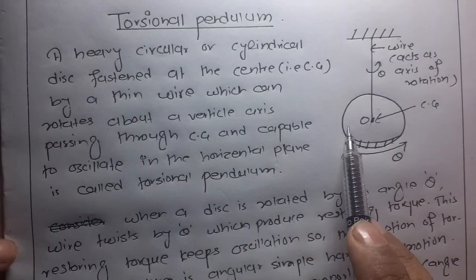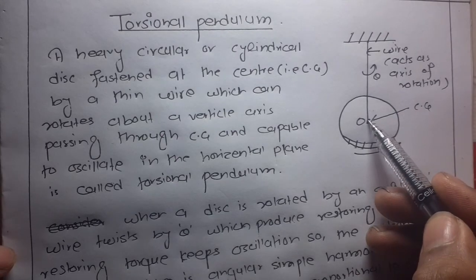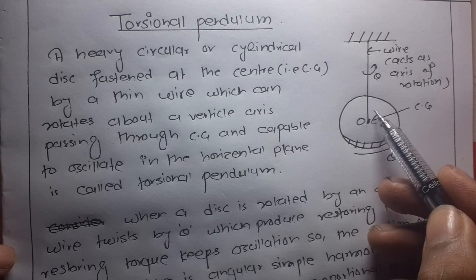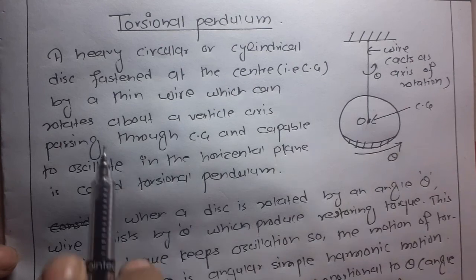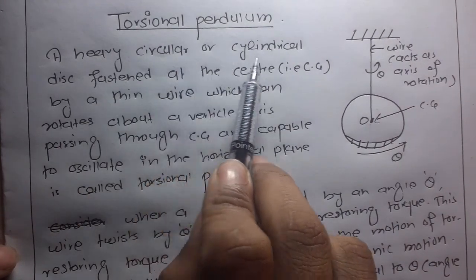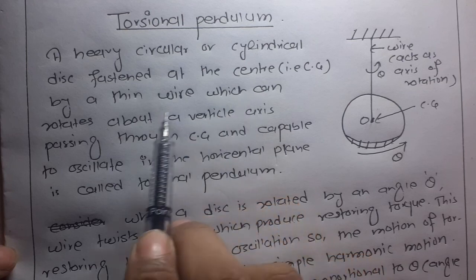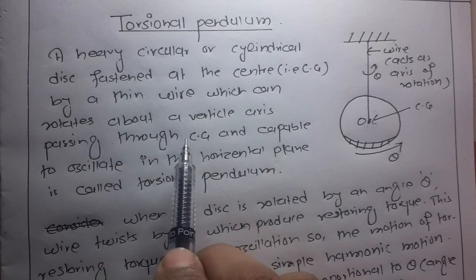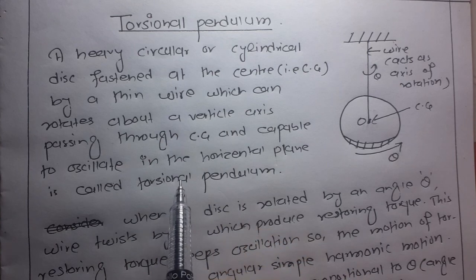A heavy circular or cylindrical disc fastened at the center of gravity by a thin wire of radius R and length L, which can rotate about a vertical axis passing through the center of gravity and capable to oscillate in the horizontal plane, is called a Torsional Pendulum.